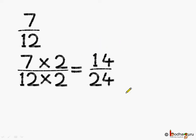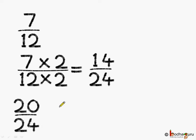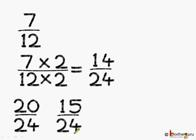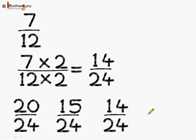So, this is the equivalent fraction of 7 by 12. Next, 20 by 24 — it already has the denominator as 24. So now we have: 15 by 24, 14 by 24, and 17 by 24.